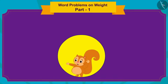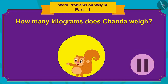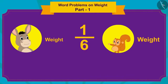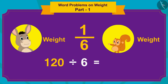Children, can you find out how many kilograms does Chanda weigh? If you want, you can stop the video and think about the answer. Chanda's weight is one-sixth of Bholu's weight. This means that to find the weight of Chanda, we have to divide Bholu's weight by 6. In this way, the weight of Chanda is 120 divided by 6, that is 20 kilograms.